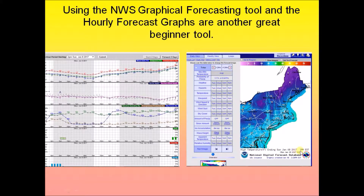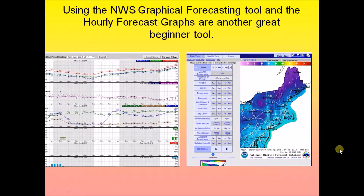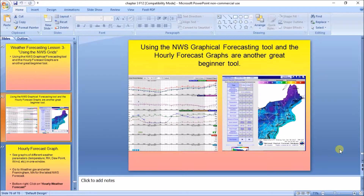It says things like 'high temperature ending Sunday January 8, 2017 at 7 p.m. Eastern.' If you remember the MOS video, the high of the day was valid at 00Z — this is basically the same thing, just in local time. So you don't have to worry about converting back and forth between Zulu time and local time. Things are really simple.